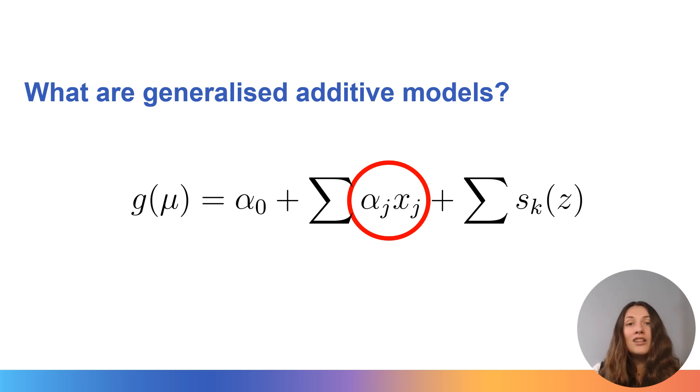Next we have a linear combination of some covariates x and coefficients estimated from the model. These assume a linear relationship between each of the covariates and the outcome of interest after adjusting for everything else in the model, and these coefficients give us an estimate of that linear relationship.